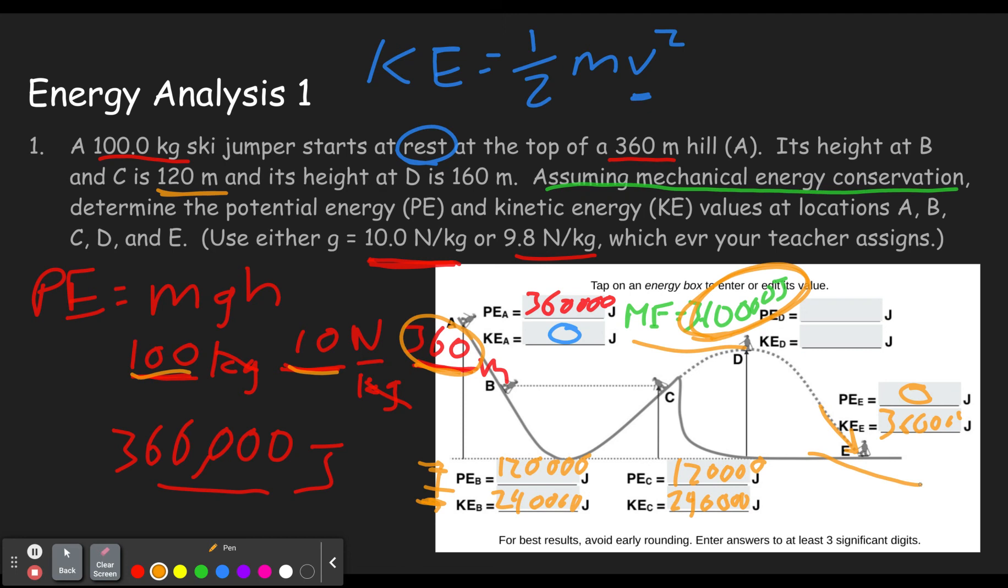And then we just got one thing left and that is to calculate at D, the potential energy. So that'd be 160,000. And if there's 360,000 total and 160,000 of it is potential, that leaves 200,000 to be kinetic.